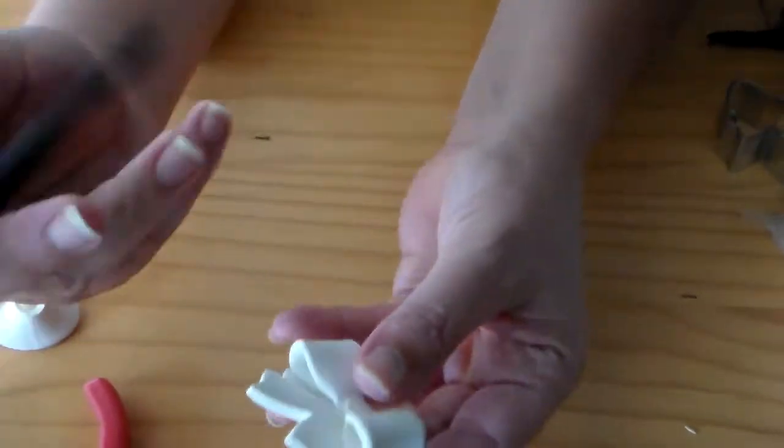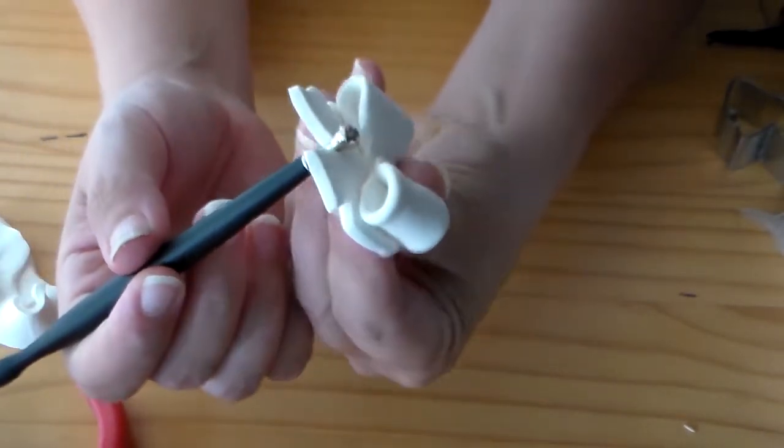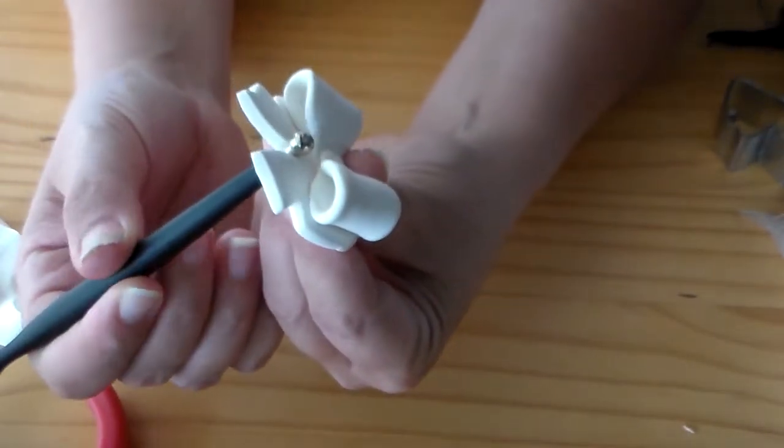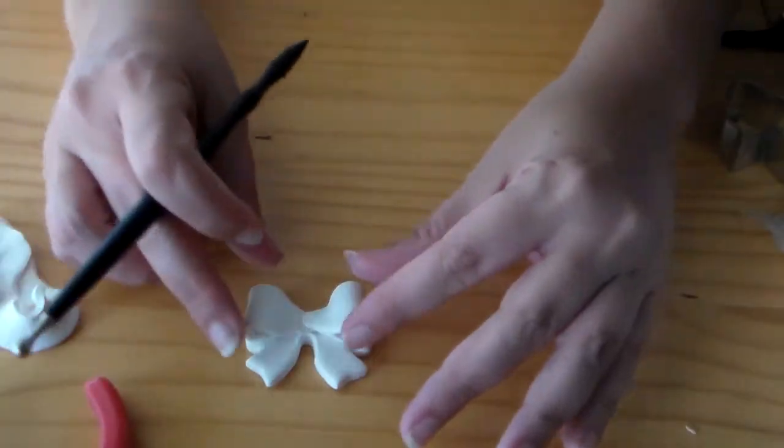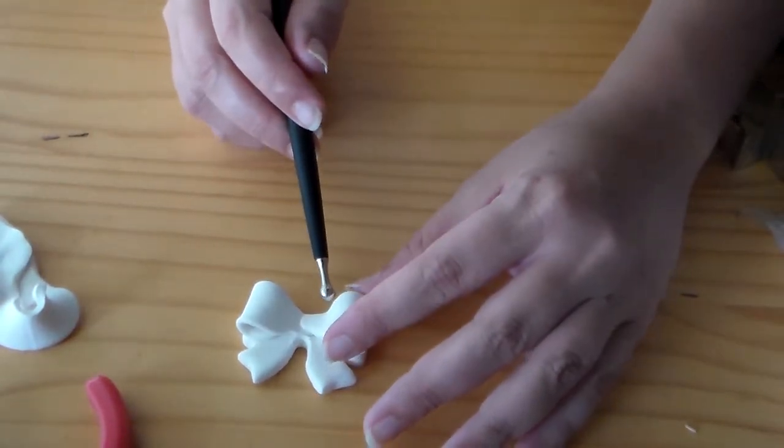I'm going to use a sculpting tool for this piece. You can use whatever works, but you just want to press in between the tags that are hanging down and you want to exaggerate that space between them so that you can do the ribbon overlay to kind of tie everything together.